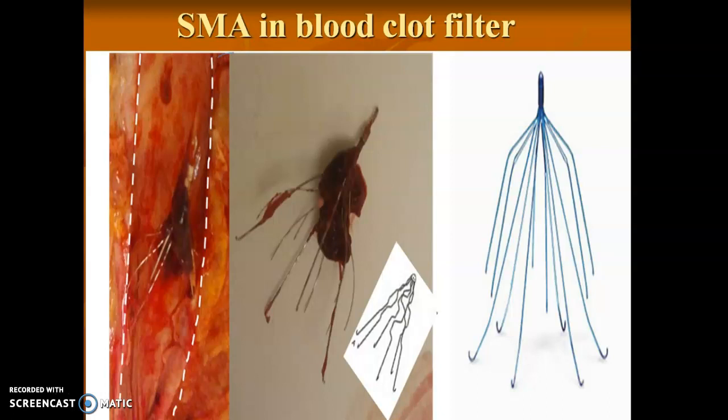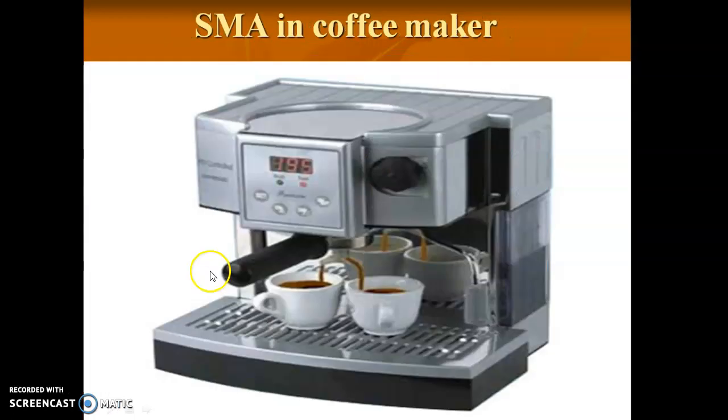SMAs are used in blood clot removal in the human body through stents. Where a person is affected by a blockage in the heart, a stent is sent into the heart and the blockage is removed. The stent is made up of shape memory alloys.